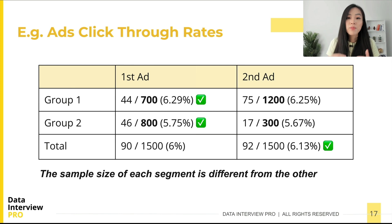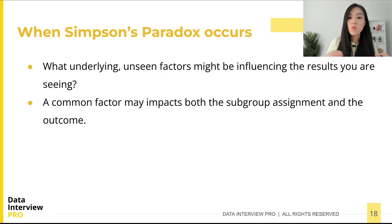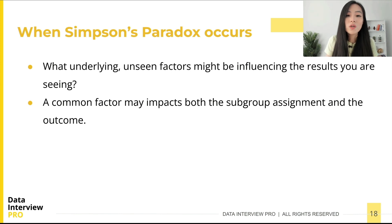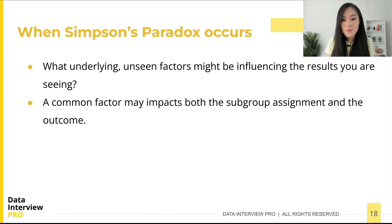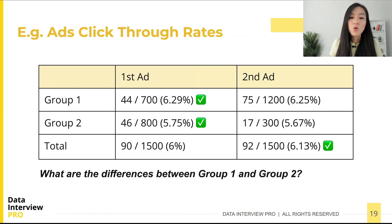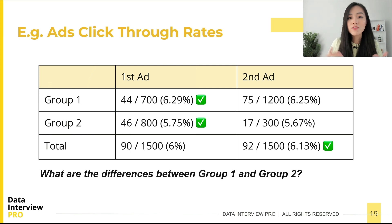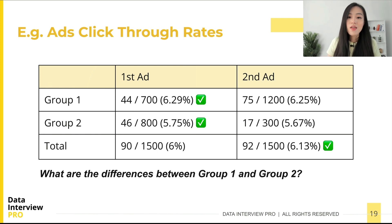You will want to pay particular attention to differences in sample sizes that vary considerably. Another way to understand when Simpson's Paradox happens is to think about underlying explanations for your data — what unseen factors might be influencing the results? A common factor may impact both the subgroup's assignment and outcome. In the previous example you might ask: what other factors, such as age, geographic location, or device type, might be influencing the result? If group one is iOS users and group two is Android users, then device type may be a factor impacting click-through rate, explaining why Simpson's Paradox is happening.